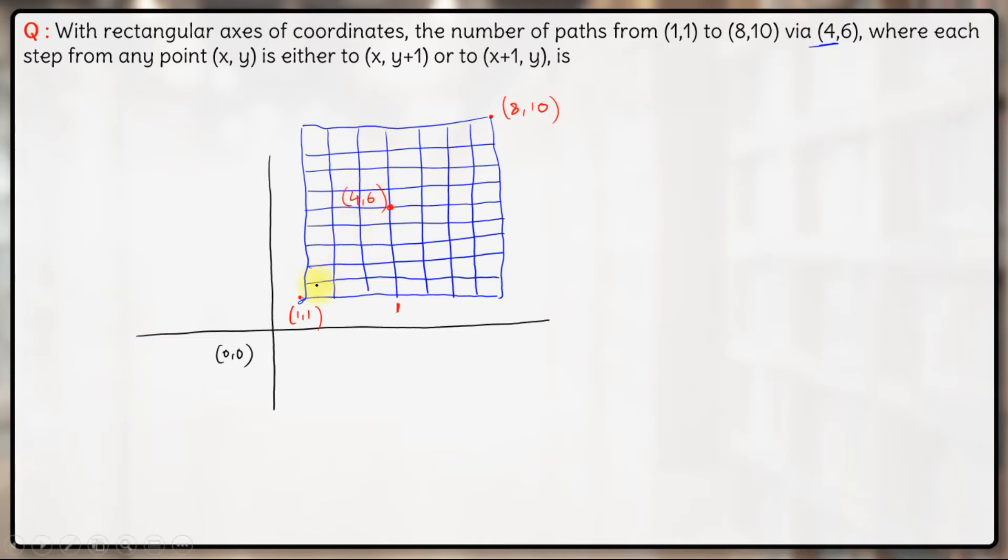So what you need to do is you need to go from this point to first this point and then from (4,6) to (8,10). So from (1,1) we need to go to (4,6) and then from (4,6) we need to go to (8,10) here. Let us calculate the number of ways for going from (1,1) to (4,6) here.